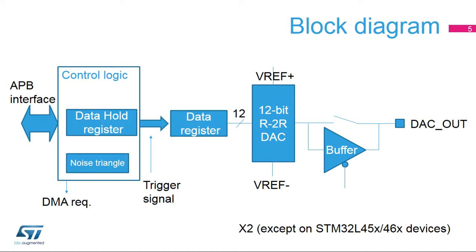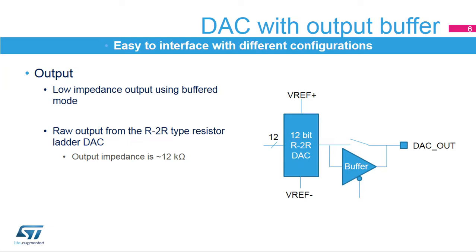Here you can see the simplified block diagram of the digital-to-analog converter. The STM32L4 integrates two of them, except on STM32L45X/46X devices, where only one DAC is implemented. The DAC output can be buffered for low-impedance loads. When unbuffered, the output is directly connected to the R2R resistor ladder network type of DAC.